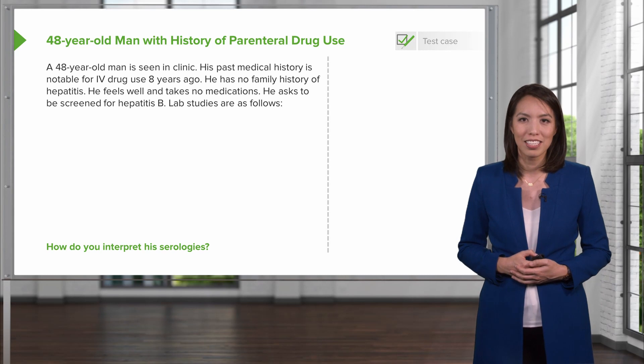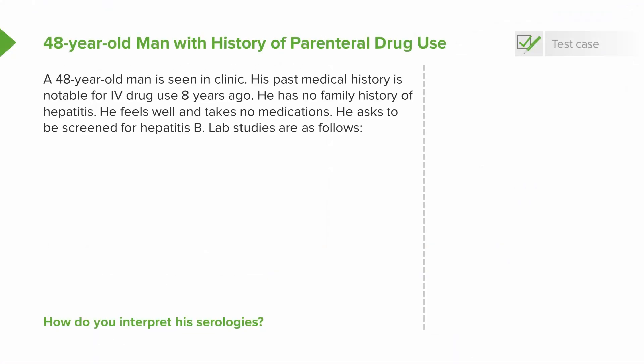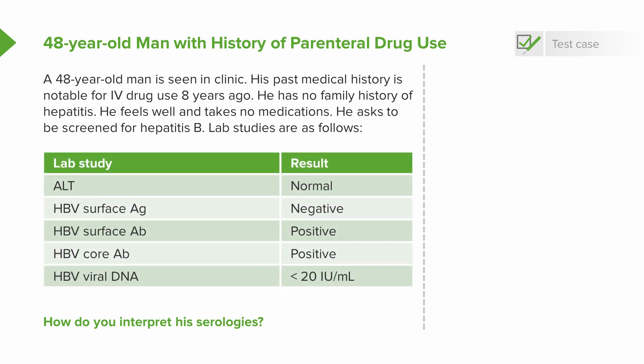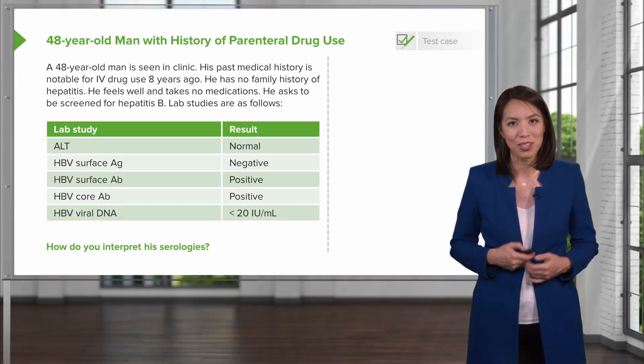Now let's go to a case. A 48-year-old man is seen in clinic. His past medical history is notable for IV drug use eight years ago. He has no family history of hepatitis, feels well, and takes no medications. He asked to be screened for hepatitis B. His ALT is normal, hepatitis B surface antigen is negative, surface antibody is positive, core antibody is positive, and when tested for viral DNA, he has less than 20 copies. So how do we interpret his serologies? This is a difficult question, so we'll break it down.